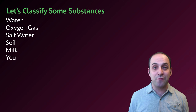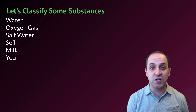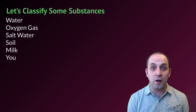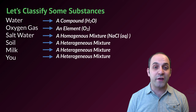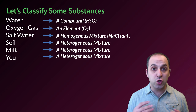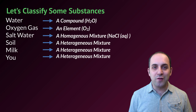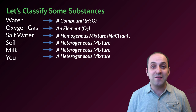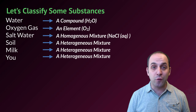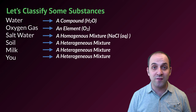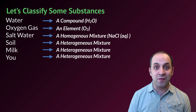I have a list of six different substances — classify each one as either an element, a compound, a heterogeneous mixture, or a homogeneous mixture. Pause the video and try it, then play through to see the answers. Water is a compound because it's made of two elements chemically combined. Oxygen gas is just one element. Salt water is a homogeneous mixture — we dissolve salt in water to make a solution, written with (aq) after the formula to show it's in aqueous solution.